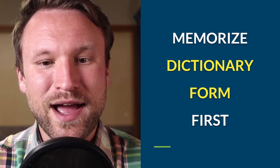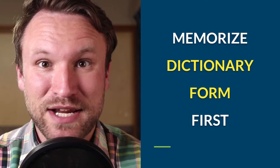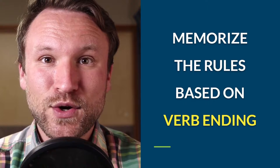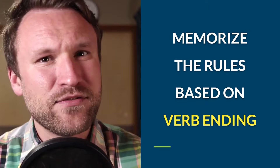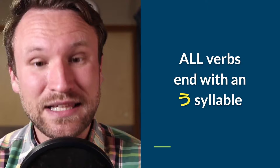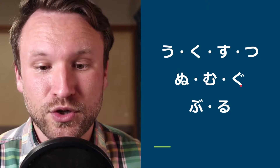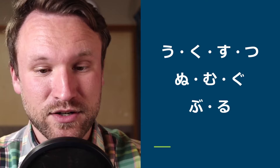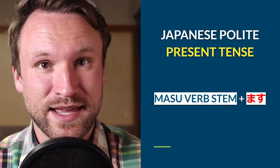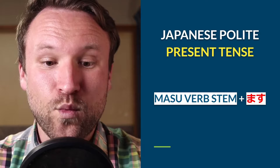My advice is to memorize the dictionary form first — that's the form you'll find in the dictionary — and then memorize the conjugation rules based on the ending of the verb. All verbs in Japanese end with a u-syllable. Not the character u, but the u sound. The possible endings are: u, ku, su, tu, nu, mu, gu, bu, and du. To make the polite present tense, you create the masu verb stem and then add masu.